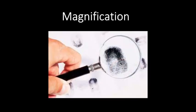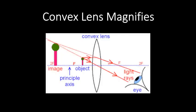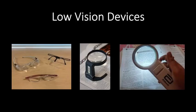Magnification is the process of making an object appear much larger than it really is. It is a measure of how large or small the image of an object is compared to that of the object. A magnifying glass is a convex lens. It is used to correct hyperopia, and magnifiers are also used by low vision patients to read.